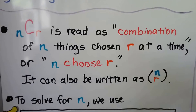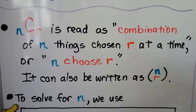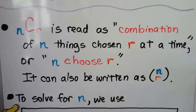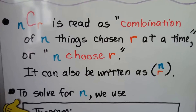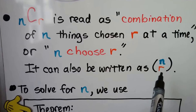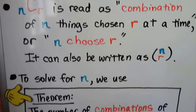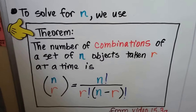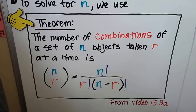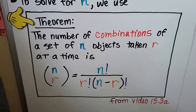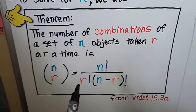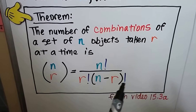When you see nCr, it's read as a combination of n things chosen r at a time. You can also read it as n choose r. You might also see it written in parentheses with the n above the r. To solve for N, we use this theorem: the number of combinations of a set of n objects taken r at a time is n choose r equals n factorial divided by r factorial times n minus r factorial.